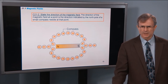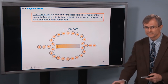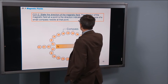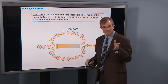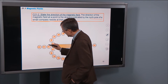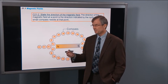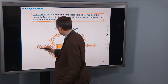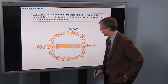Concept 2: state the direction of the magnetic field. The direction of the magnetic field at a particular point is the direction indicated by the north pole of a small compass needle at that point. As we saw in the demo, if you put that compass needle by the north pole of a magnet, the compass needle points away from that north pole. That's the direction of the magnetic field — they come out this way, come around, just like we showed. That's all there is to it.